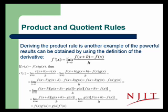Deriving the product rule is another example of the powerful results that can be obtained using the definition of the derivative: f prime of x is equal to the limit as h goes to 0 of f of x plus h minus f of x over h.